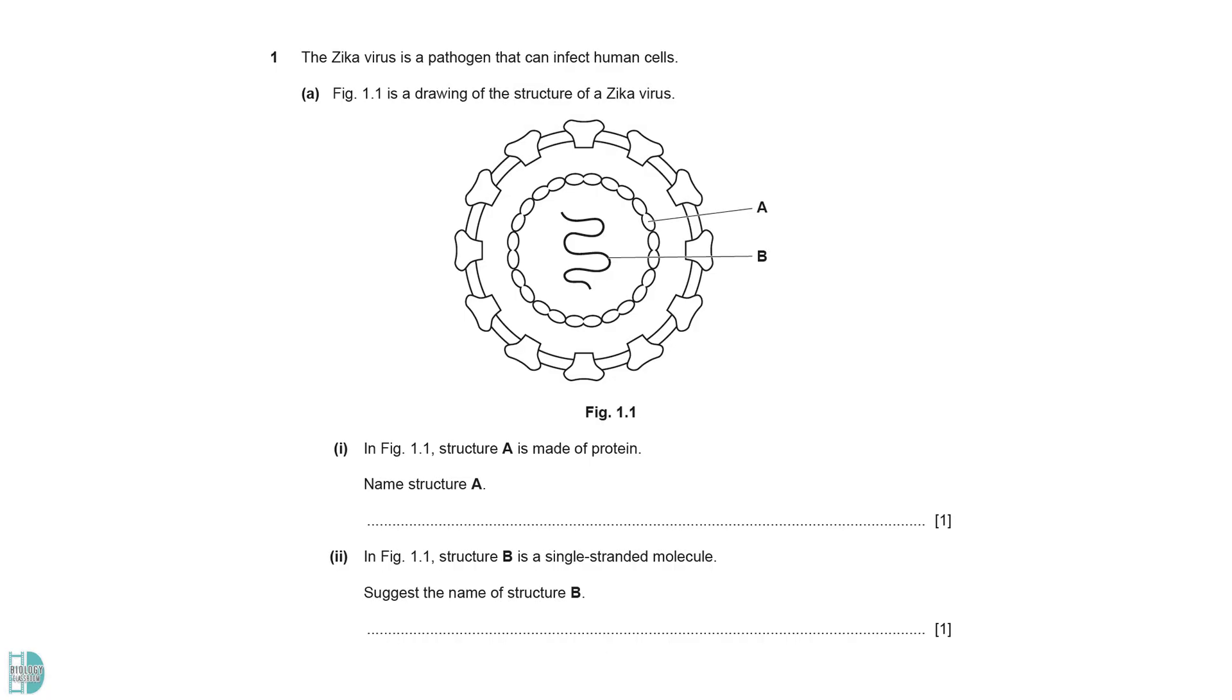Question 1 is about the Zika virus. A is the capsid. It is the protein shell that surrounds and protects a virus' genetic material. You can also refer to it as a protein coat. The subunit is called a capsomere.